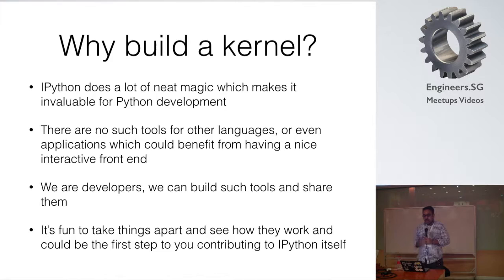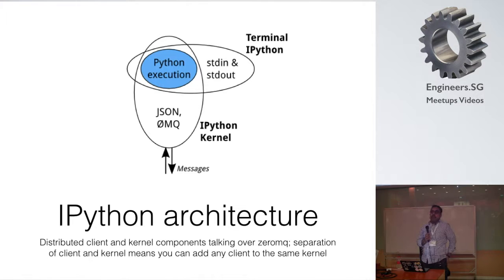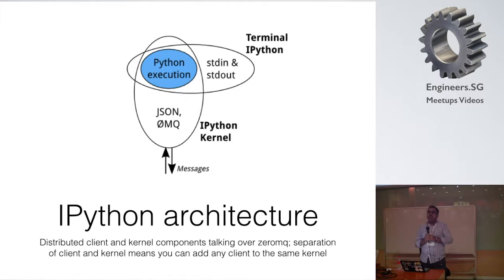Let's understand how IPython works. If you start a regular Python shell, that's a single process — a Python interpreter instance. You pass in commands, it executes them, prints output. You won't be able to connect into that shell from elsewhere. But when you open an IPython session, that is actually a client and a shell running in the background — a kernel and a client, so you have more than one process.